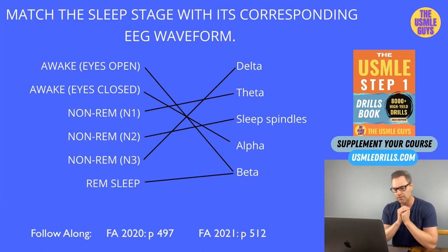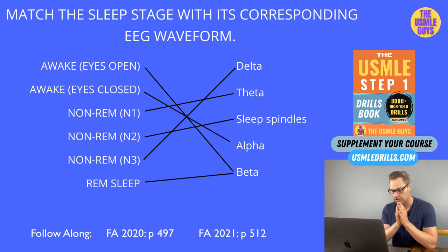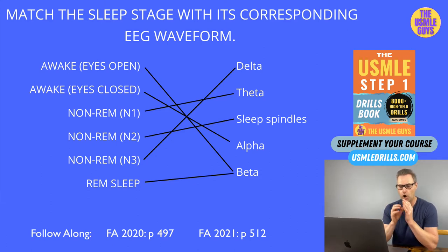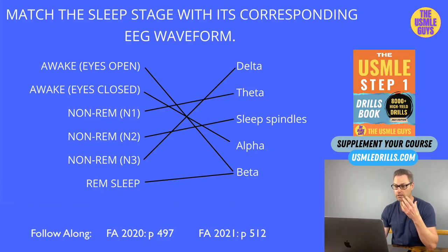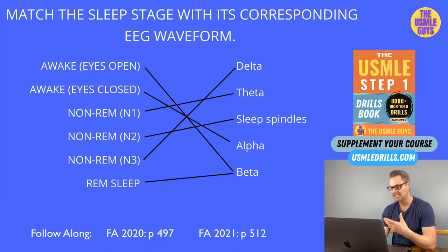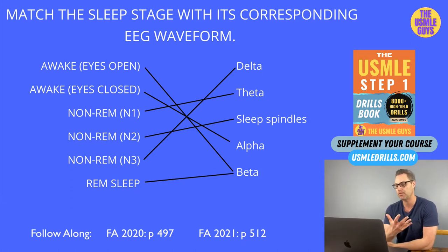N3 is our deepest non-REM stage, where you spend about 25% of your time. This is where pathologies like sleepwalking, night terrors, and bedwetting can occur. Benzodiazepines are an effective aid in preventing sleepwalking and night terrors by decreasing the length of time spent in N3 — taking advantage of their adverse effect of disrupting this stage. N3 is characterized by delta waves, which have the highest amplitude but lowest frequency.